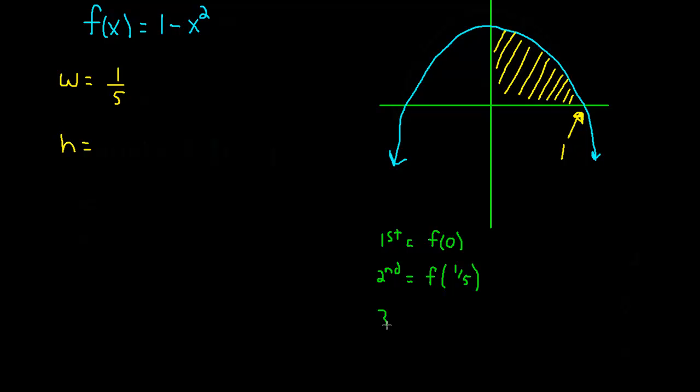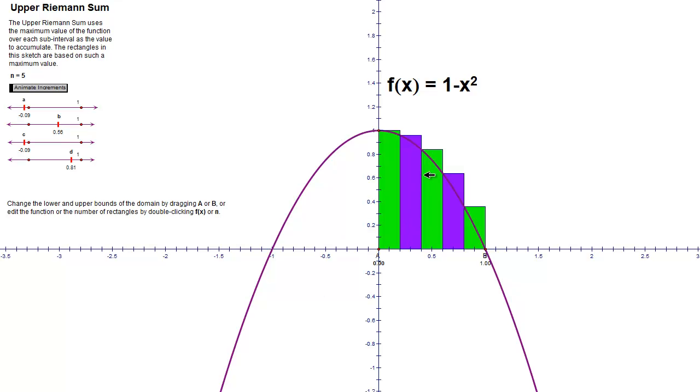Okay, so the height of my second rectangle is F of 1 fifth. Well, how about the third rectangle? Okay, the third rectangle is going to be F of what? Well, let's go back to it and see what we have, this green rectangle. First rectangle was F of 0. The second rectangle was F of 1 fifth. The third rectangle is going to be F of 2 fifths. Or, think of it this way, think of it as F of the width of one of my rectangles multiplied by 2. Again, the height of the first rectangle is F of 0. This is F of 1 fifth. This is F of 1 fifth times 2.